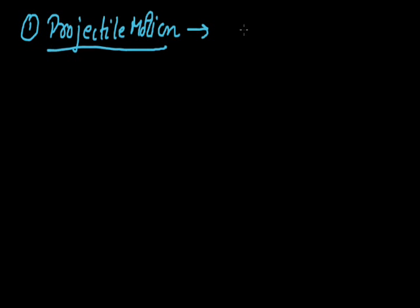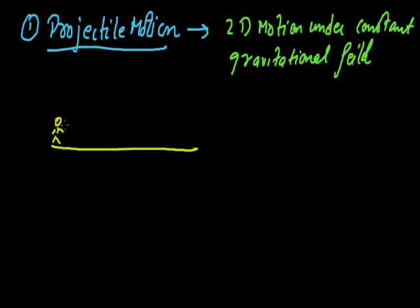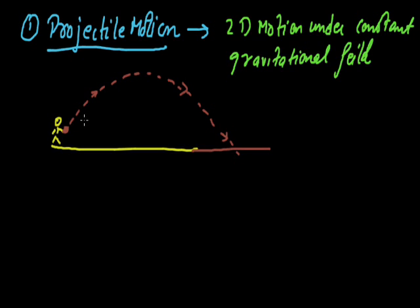Now you must be wondering what parabolas are useful to us for. Let me tell you about some common examples of parabolas. The first quite interesting example is projectile motion — it is a 2D motion of an object under a constant gravitational field. If you throw a stone, the path it traces is somewhat like a parabola. If we neglect air resistance, it is exactly a parabola.